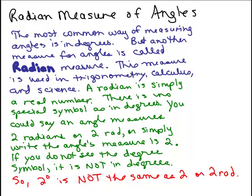In this video we're going to define what a radian measure of an angle is. First of all, the most common way of measuring angles is in degrees. Most people have heard of that. But another measure for angles is called radian measure. And this measure is used in trigonometry, calculus, and science.